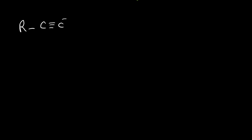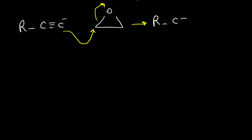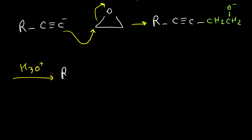Acetylide anions are also able to attack an epoxy ring and open the ring. As a result we get C triple bond C, then CH2 CH2 O negative, and again after adding acid to this mixture we can have an alcohol with a triple bond — an alkinol.